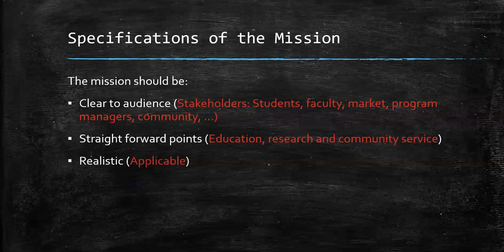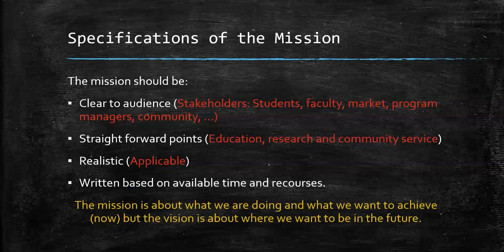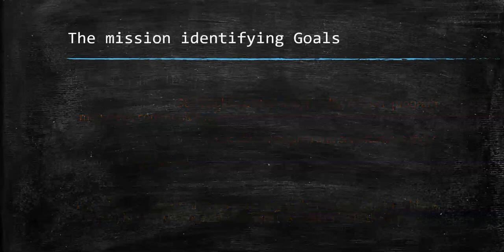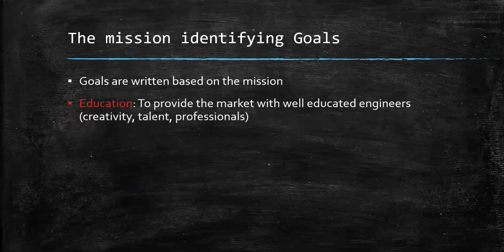The mission should be realistic, which means it should be applicable — written based on available time and resources. The mission is about what we are doing and what we want to achieve, but the vision is about where we want to be in the future. Goals are written based on the mission. For example, education as a key word means to provide the market with well-educated engineers who have creativity, talent, and professionalism.